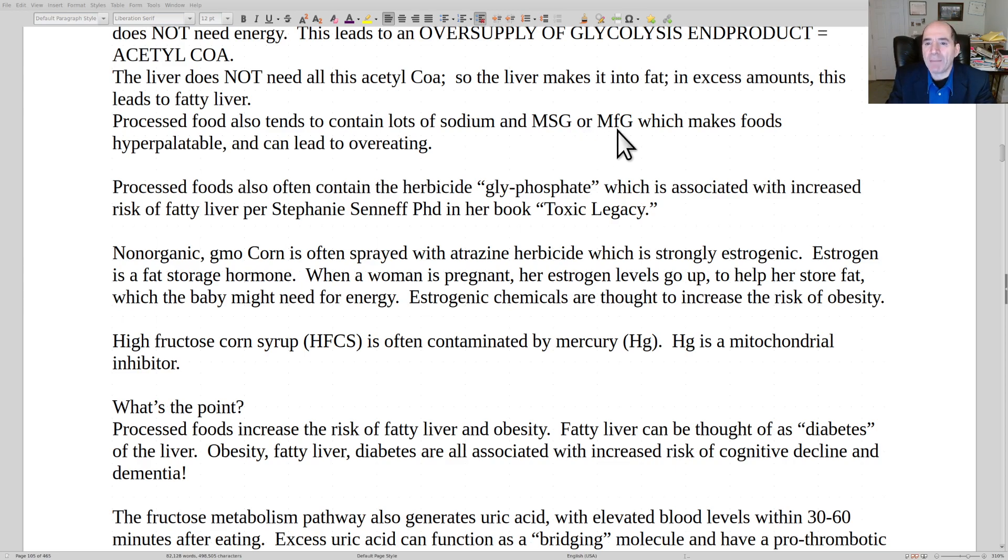The tricky thing about the MFG, manufactured free glutamate, is you can take a protein. Big problem with gluten is the name gluten kind of comes from having a lot of glutamate. When you process it a lot, you break up the original protein into individual amino acids.